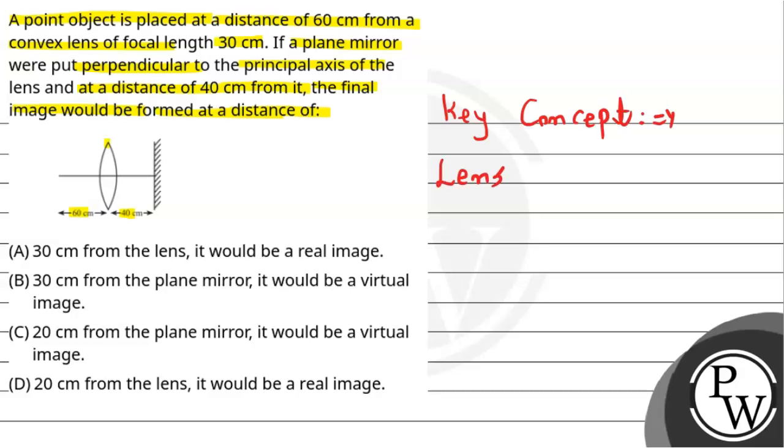let's talk about the key concept which we are going to use here for this question. Simply we'll use the lens equation, which can be stated as 1/f = 1/v - 1/u, where v is the image distance from the lens, u is object distance from the lens, and f is the focal length of the lens.